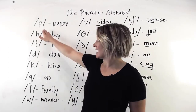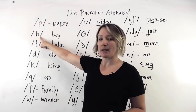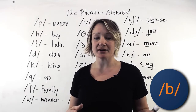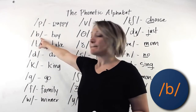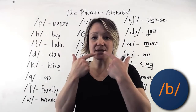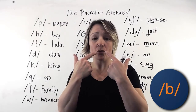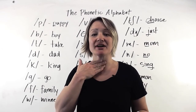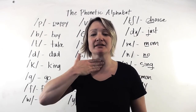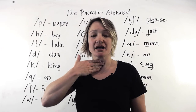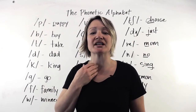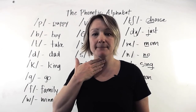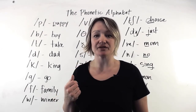But if you compare that — puh — to this sound — buh — it's almost the same sound. We call this a minimal pair. So buh is the same form in my mouth. My mouth looks exactly the same — buh — but I have vibration here. If I put my hand here — buh — I can feel vibration in my vocal chords. Puh: no vibration. Buh: there is vibration.